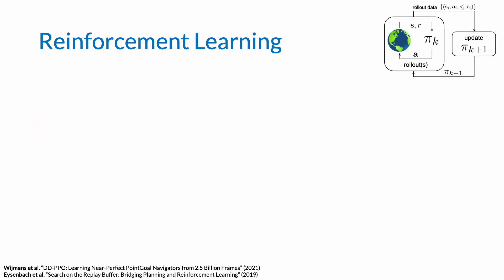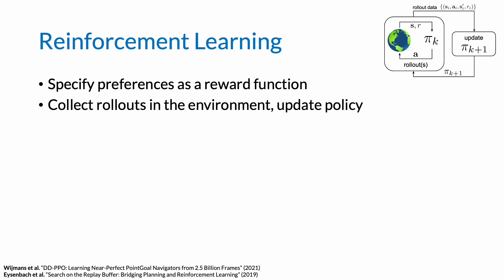An effective way to do so is to specify these constraints and preferences in the form of a reward function and optimize them using reinforcement learning.